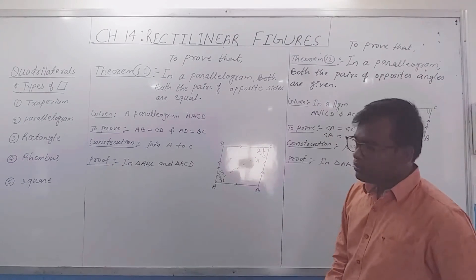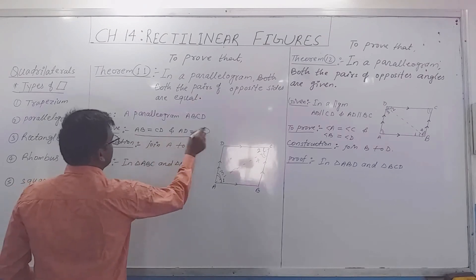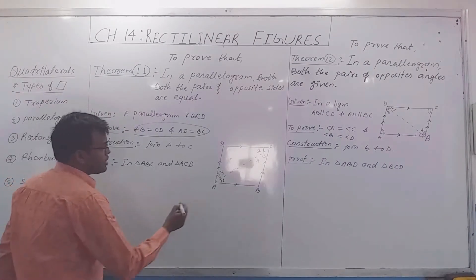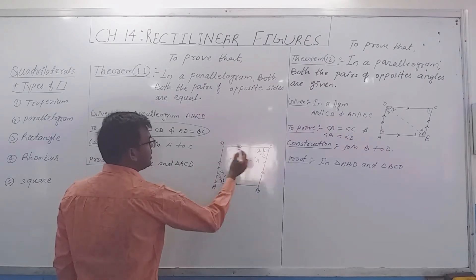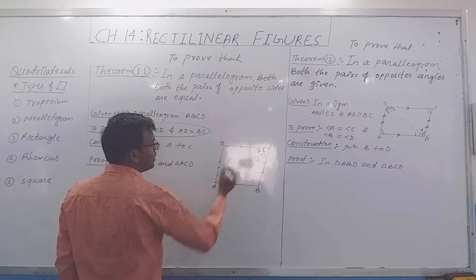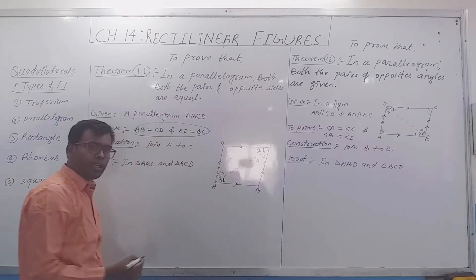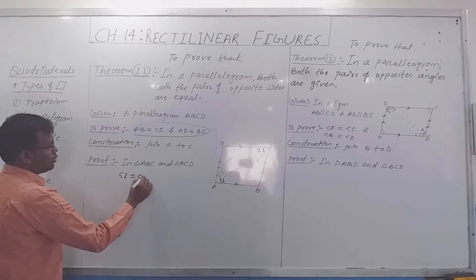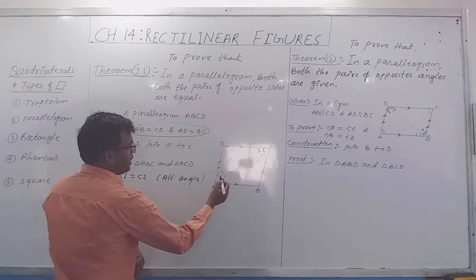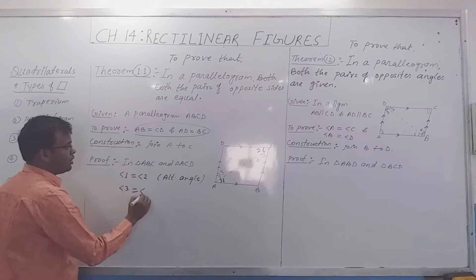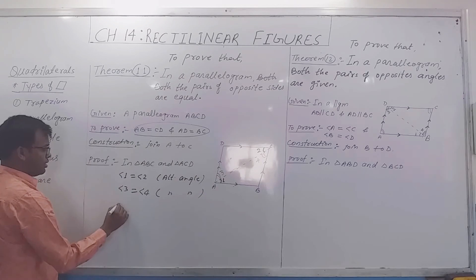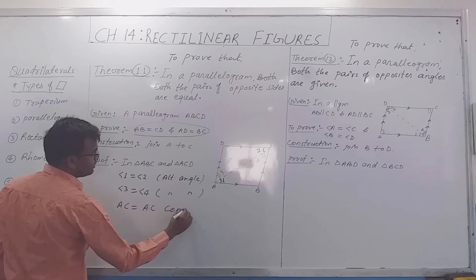Now for the proof part: consider triangle ABC and triangle ACD. Here, angle 1 is equal to angle 2. Why? Since AB is parallel to CD, these are alternate angles. So angle 1 equals angle 2 by the alternate angle property. Similarly, angle 3 equals angle 4 by the same reason.